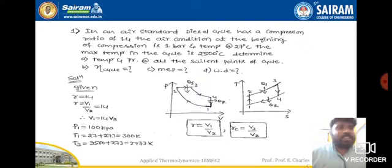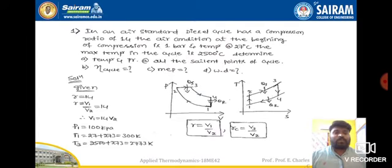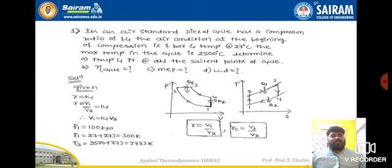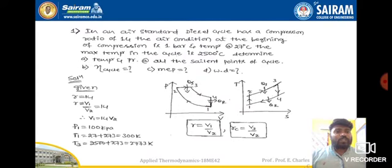We need to find the temperature and pressure at all the salient points of the cycle — that means the first, second, third, and fourth states. In the PV and TS diagrams we have four different states, and we need the pressures and temperatures at each. We also need to find the cycle efficiency using the diesel cycle efficiency formula, then the mean effective pressure, and finally the work done.